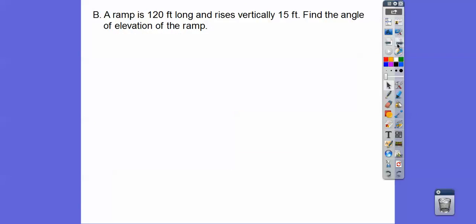Okay, so a ramp is 120 feet long and rises vertically 15 feet. Find the angle of elevation of the ramp. Okay, so this ramp is 120 feet long right there, and then this is a tangent ratio.